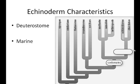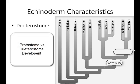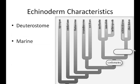In deuterostomes, the mouth develops from a different place on the gastrula. The molluscs, annelids, and arthropods are protostomes — the protostome's mouth develops from the opening on the gastrula. Echinoderms and chordates are the only two groups that develop this way; therefore, humans are more closely related to a sea star than they are to a beetle or a clam.